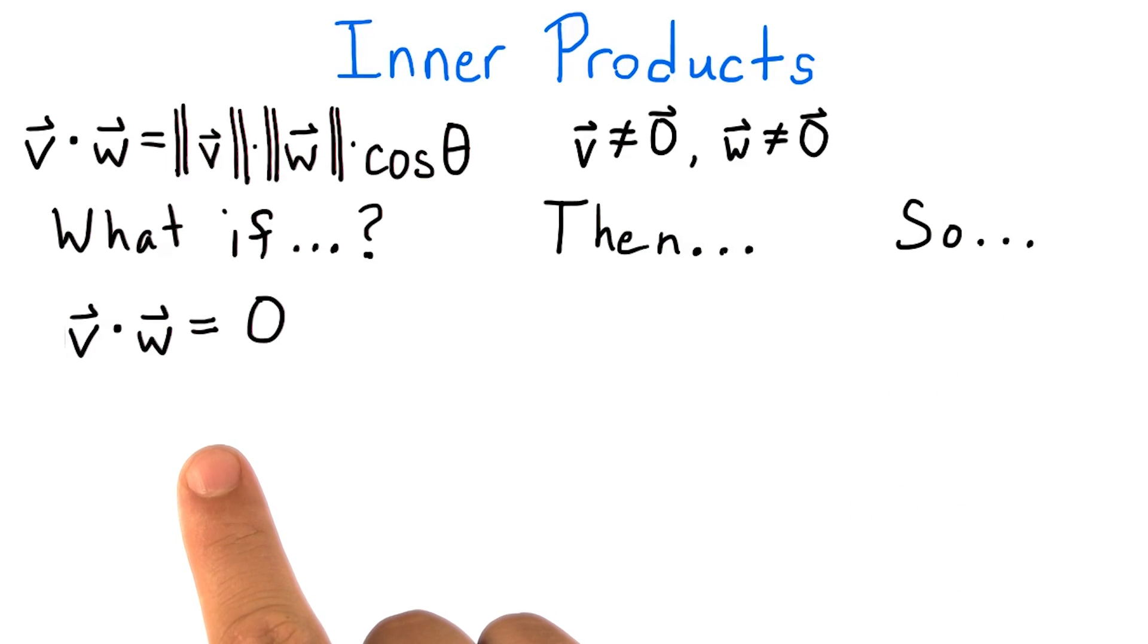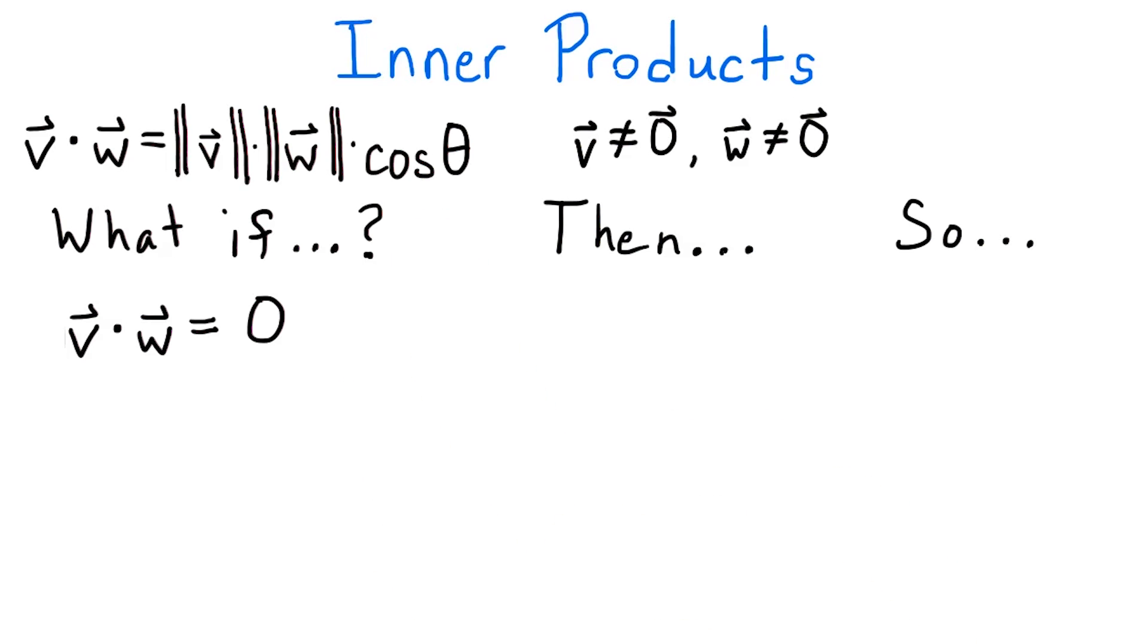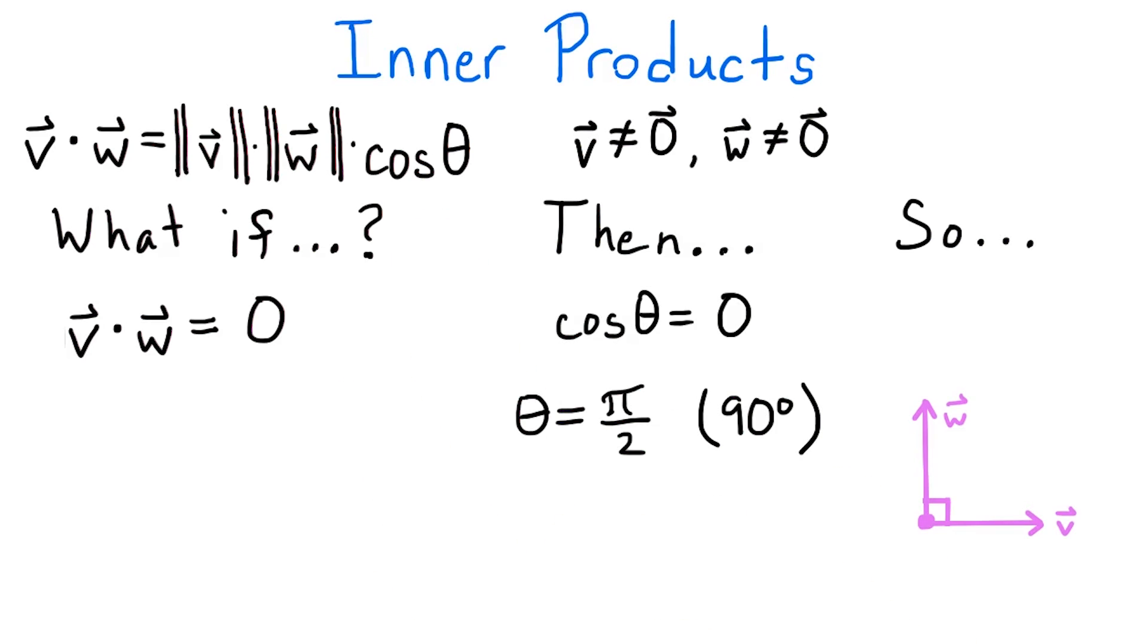Finally, if v dot w equals zero, then since we assumed that neither v nor w was the zero vector, this means that cosine of theta must equal zero. This means that theta equals pi over two radians or 90 degrees. So v and w are at a right angle to each other.